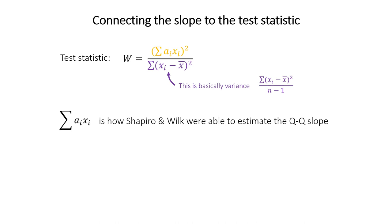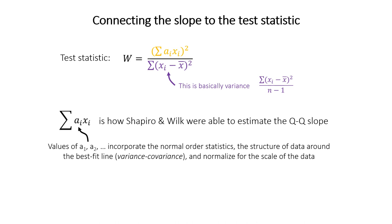So the a values are basically constants that kind of fold in a whole bunch of things. They incorporate these normal order statistics. They incorporate the structure of the data around the best fit line, the scatter of the data, this thing called the variance covariance matrix. They normalize for the sample size. They normalize the scale of the data, whether you're measured on a scale of zero to five or zero to a million, that sort of thing.